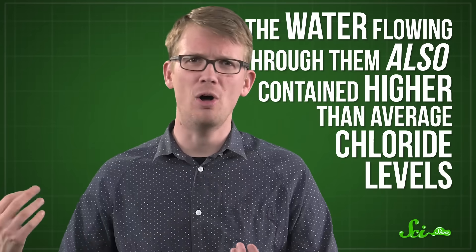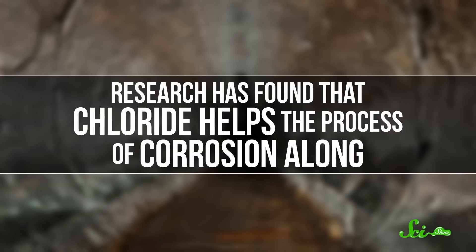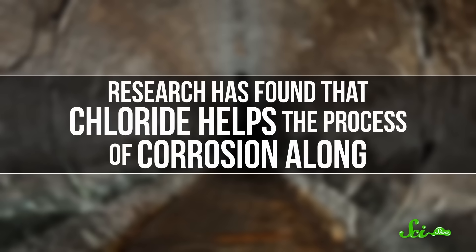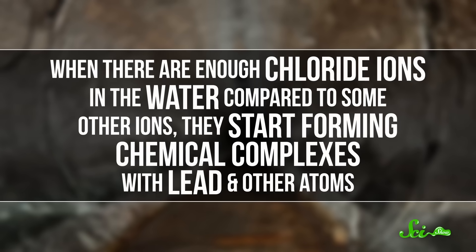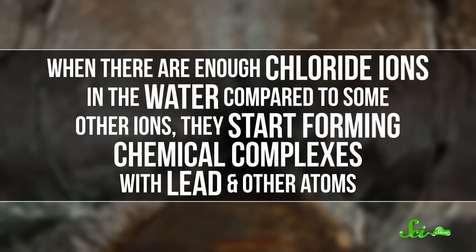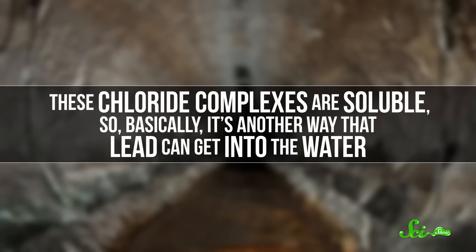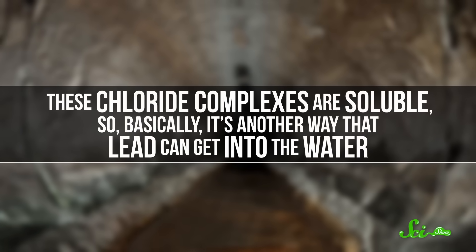But that's not the whole story. Not only were these pipes left unprotected, but the water flowing through them also contained higher-than-average chloride levels. Research has found that chloride helps the process of corrosion along. When there are enough chloride ions in the water compared to some other ions, they start forming chemical complexes with lead and other atoms. And these chloride complexes are soluble. So basically, it's another way that lead can get into the water.